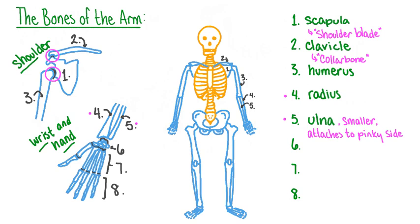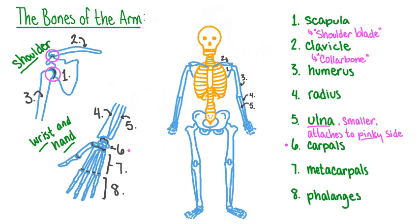A helpful way to remember the difference between these two bones: the pinky finger is the smallest of your four fingers, and the ulna is the shorter of the two names, having only four letters. The bones of the wrist are called carpals, from the Greek and Latin words for wrist — carpos or carpus. There are eight small, irregularly shaped carpal bones in the wrist. The bones of the palm of the hand are called metacarpals — meta meaning next to or after, and carpal meaning wrist.